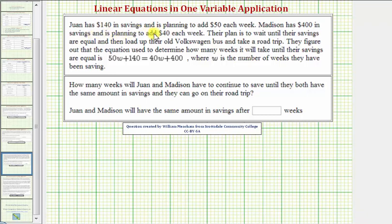Juan has $140 in savings and is planning to add $50 each week. Madison has $400 in savings and is planning to add $40 each week. Their plan is to wait until their savings are equal and then load up their Volkswagen bus and take a road trip. They figure out that the equation used to determine how many weeks it will take until their savings are equal is 50W plus 140 equals 40W plus 400, where W is the number of weeks they have been saving.